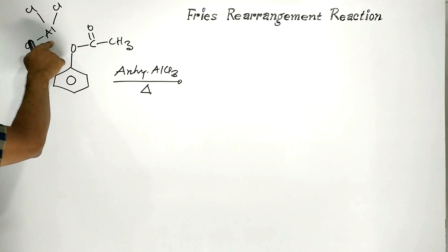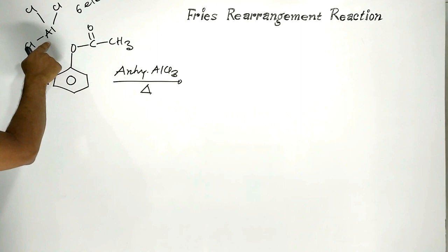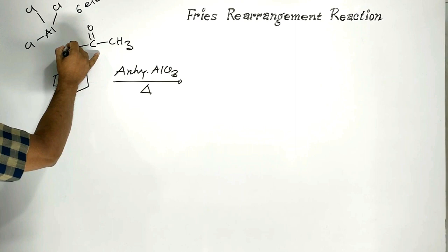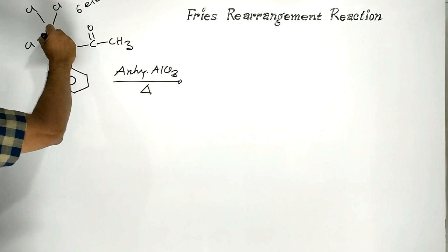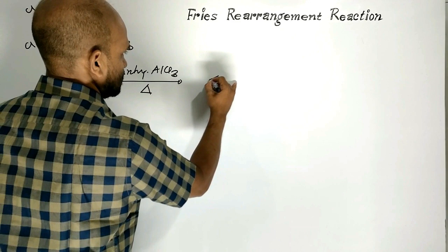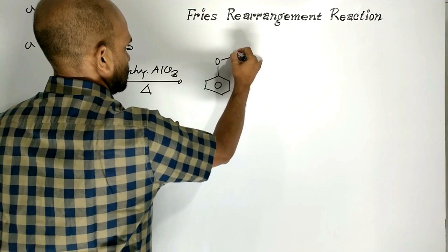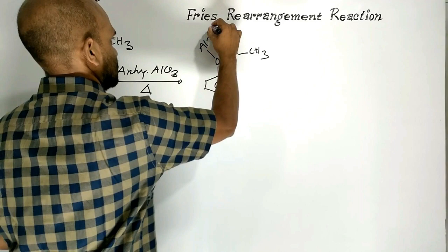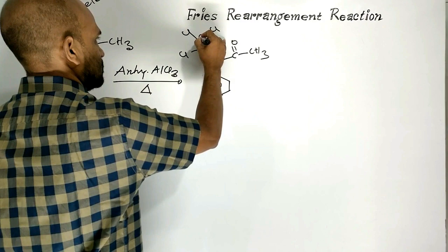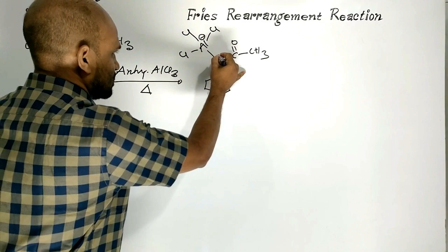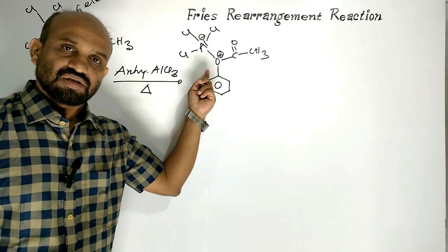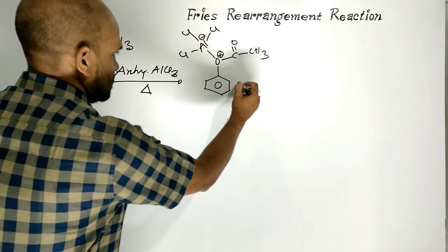Around aluminium, only six electrons are present, so aluminium is not octet-fulfilled. That is why oxygen can form a coordinate covalent bond with its lone pair of electrons. As a result, a complex is formed where negative charge develops over aluminium and positive charge over oxygen, because oxygen donated its lone pair of electrons to aluminium.